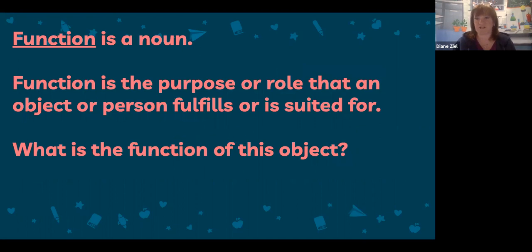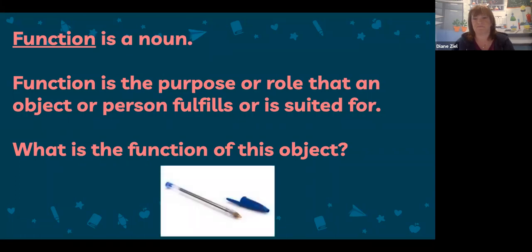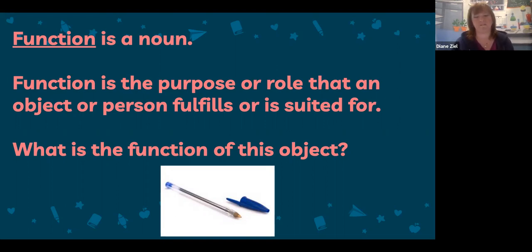Our first word is 'function.' Function is a noun. Function is the purpose or role that an object or person fulfills or is suited for — in other words, it's why you use that thing or why that person does that job. For example, what is the function of this object? If you said that's a pen and its function is to write on paper, you would be correct and correctly using the meaning of the word 'function.'